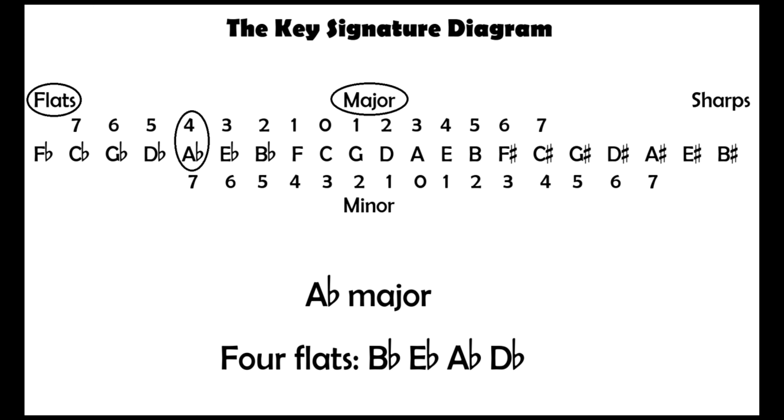If a question asks us how many sharps or flats are in the key signature of G sharp minor, find G sharp in the diagram. It's minor, so look at the number below. This number 5 is to the right of the 0, so that means it's a sharp key signature.